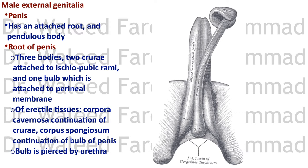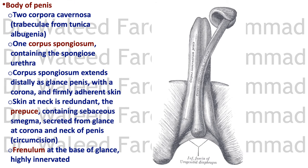The urethra runs within the corpus spongiosum — remember that. The body of the penis contains the two corpora cavernosa, which have trabeculae inside extending from the tunica albuginea covering. These trabeculae transform the inside into cavities filled with blood during erection.